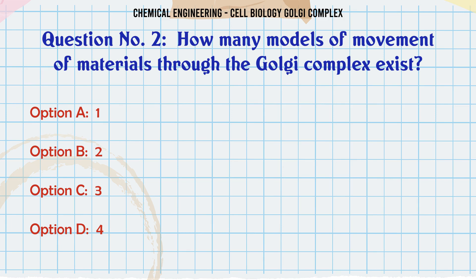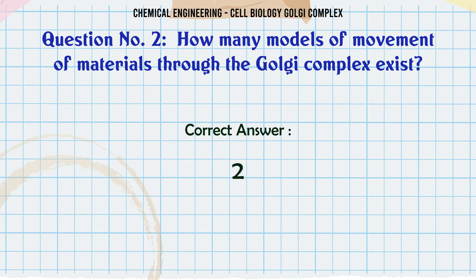How many models of movement of materials through the Golgi complex exist? A) 1, B) 2, C) 3, D) 4. The correct answer is 2.